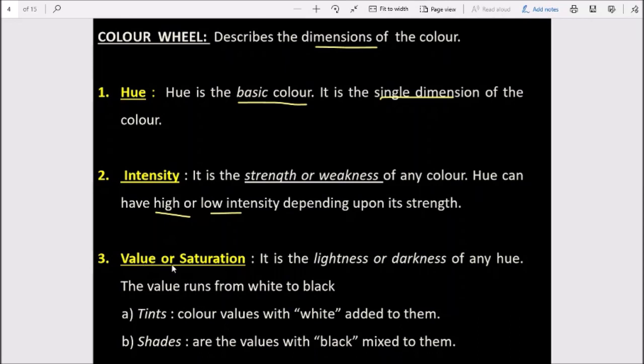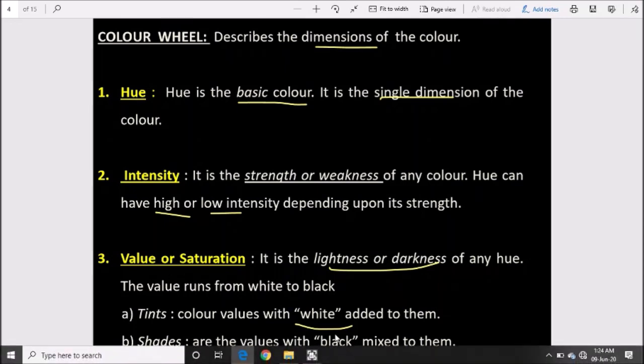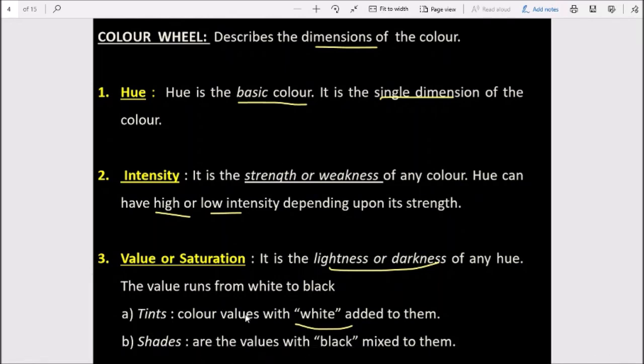Third, we have value or saturation. It is the lightness or darkness of any hue. When any hue moves toward lightness, meaning toward white shade, or toward darkness, meaning toward black shade, that is called its value or saturation. The value runs from white to black. Two terms come here: when we add white color to any hue, that is known as tint. And if we mix black into it, that is known as shade. So tint is white, and shade is formed by mixing black.